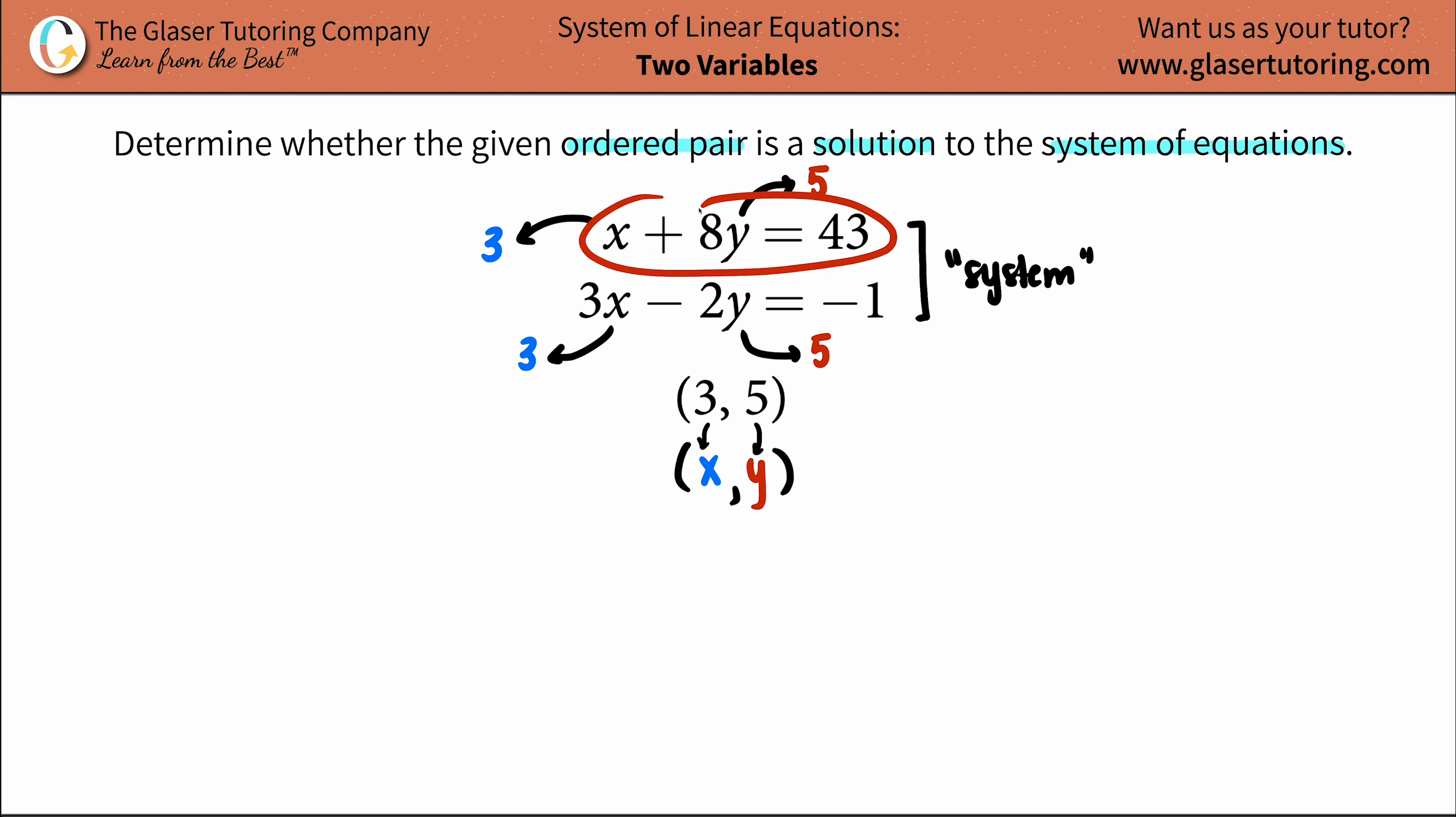I'm going to do the top equation on the left-hand side, the bottom one's going on the right. So let's just sub this in. We have a 3, because it's just one x value, so a 3, plus 8 times the y value. The y value is 5. And let's see, will it equal 43?